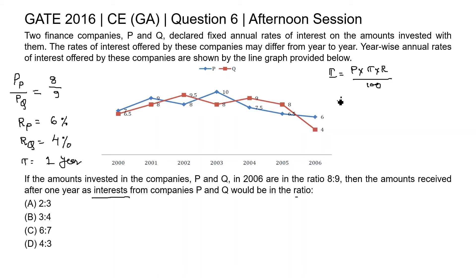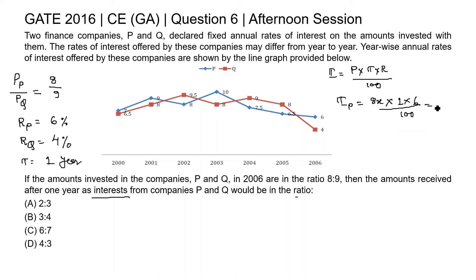So interest for company P: the principal amount is 8, so suppose it is 8x. Then 8x × time of 1 year × rate of 6 percent gives 8 × 6 = 48x divided by 100.